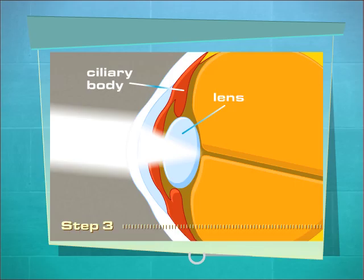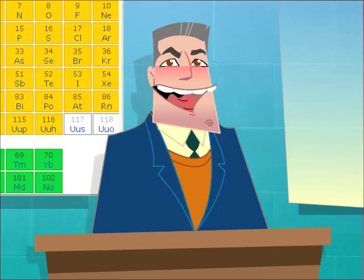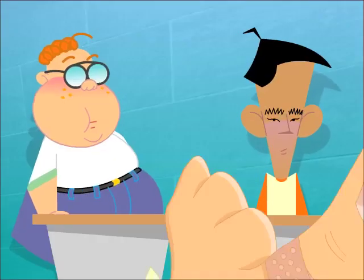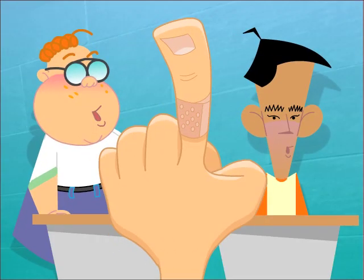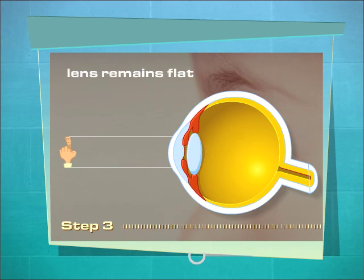The ciliary body surrounds the lens, and its muscles and ligaments suspend and control the shape of the lens. For example, when you look at a distant object, the rays of light are almost parallel. Therefore, the lens can remain flat and focused on the retina, the inner layer of the eye that contains the photoreceptors.